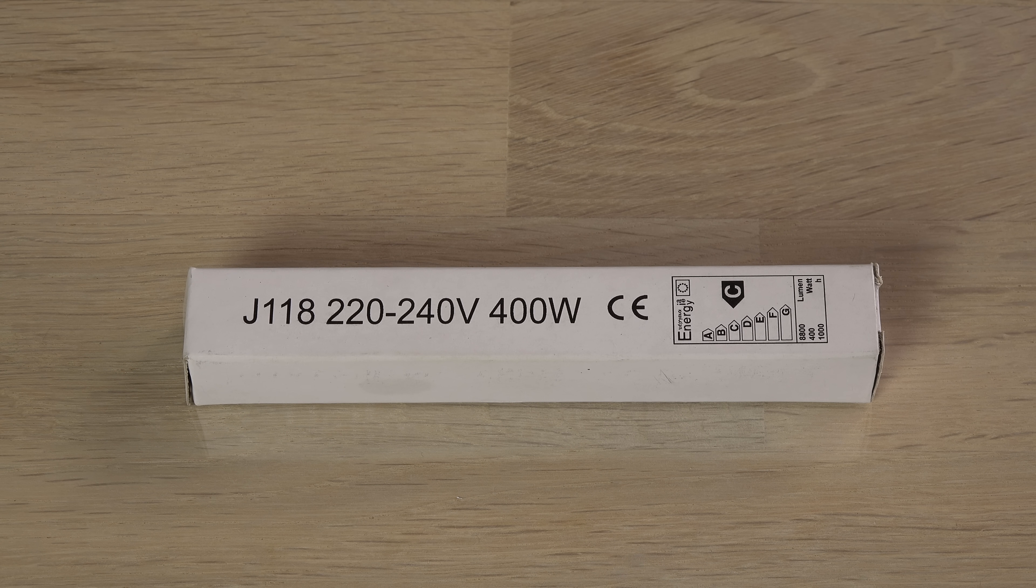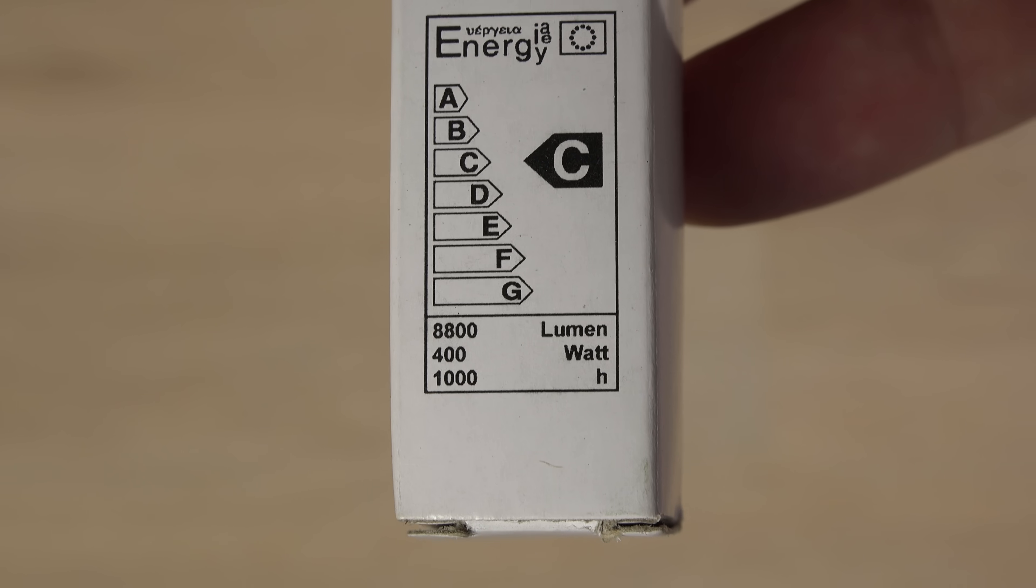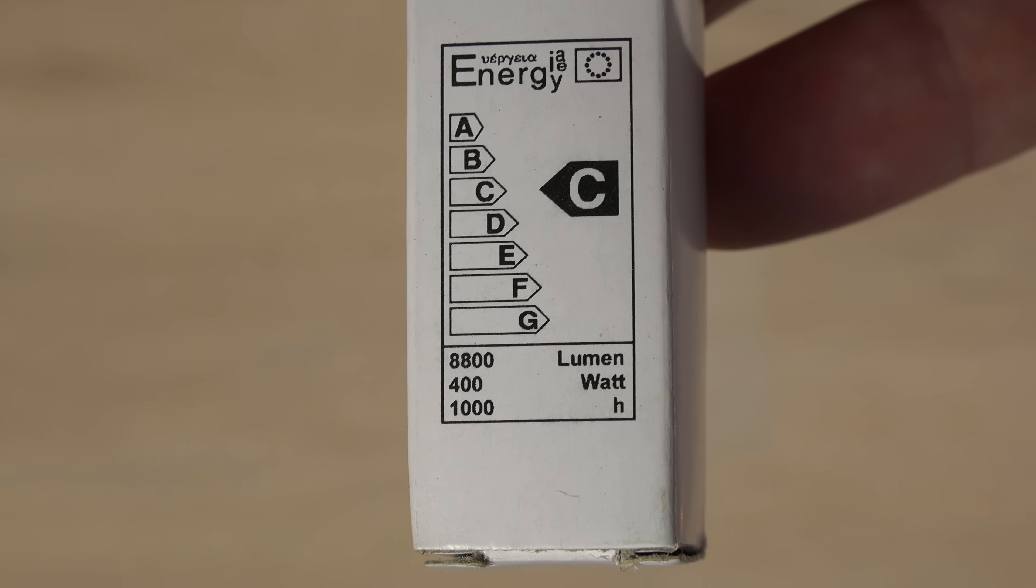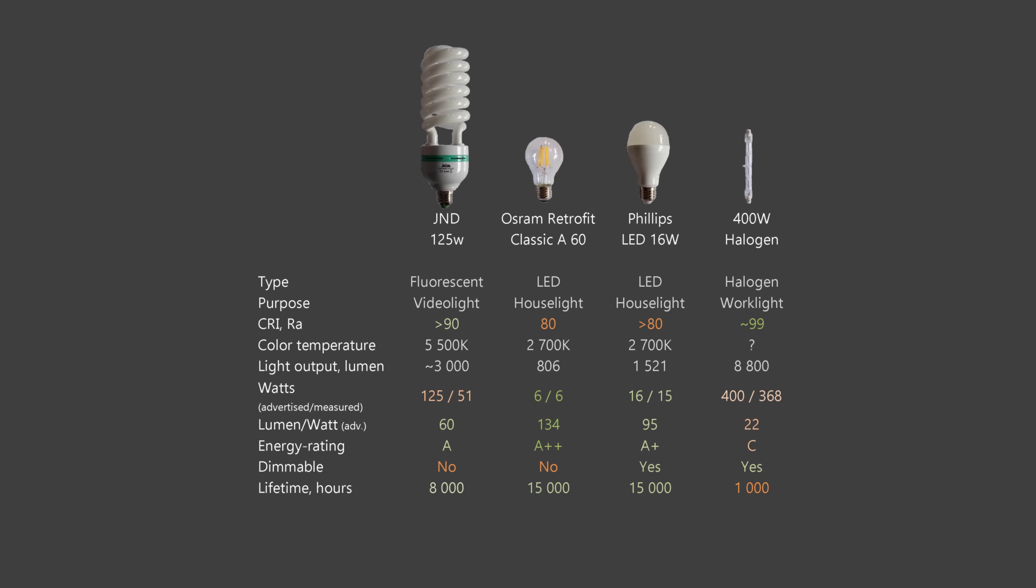The final bulb is the very popular 400 watt halogen work light. It may use a lot of electricity but puts out close to 9,000 lumens. This one is a little below spec at 368 watts. So here is the final summary.